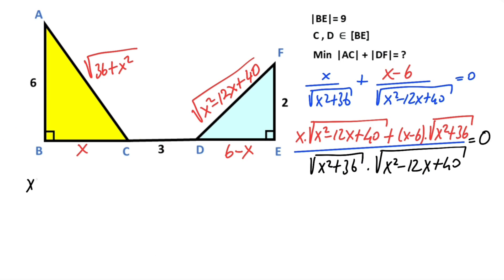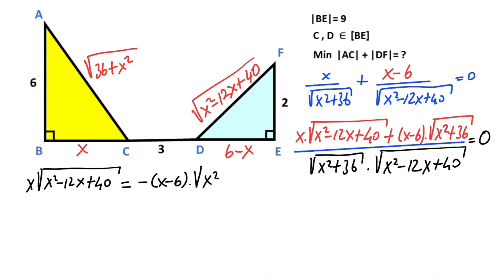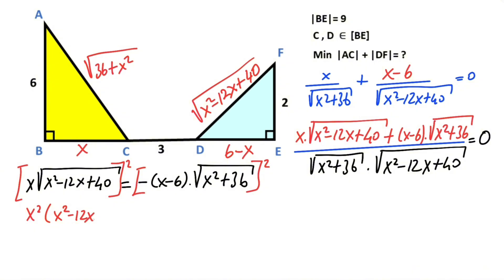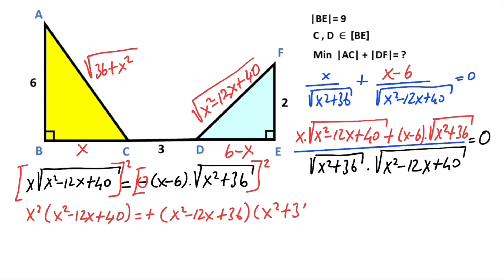After cross multiplication: x times the square root of (x squared minus 12x plus 40) equals negative (x minus 6) times the square root of (x squared plus 36). Squaring both sides: x squared times (x squared minus 12x plus 40) equals (x minus 6) squared times (x squared plus 36). Note that (x minus 6) squared equals x squared minus 12x plus 36.